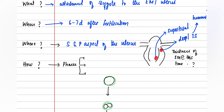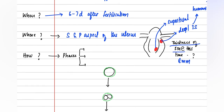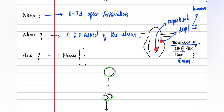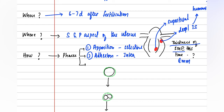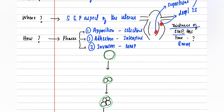The thickness of the endometrium at the time of implantation is around eight millimeters. Implantation also occurs in three phases. The first phase is opposition, which occurs with the help of selectins. The second phase is addition, which occurs with the help of integrins. The third phase is invasion, which occurs with the help of matrix metalloproteinases.